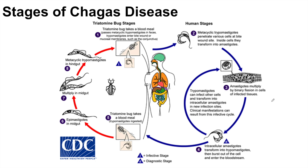The triatomine bug infects an individual through fecal material. The bug will bite an individual first and then will usually defecate, leaving fecal material behind which carries metacyclic trypomastigotes. These trypomastigotes can then enter the bite wound itself or will enter a mucosal membrane such as the conjunctiva of the eyes. When a person wipes their face, if there's any fecal material on their face, that fecal material can enter a mucosal membrane such as the mouth, nose, or eyes — and usually it's the eyes.